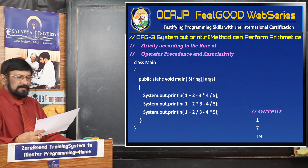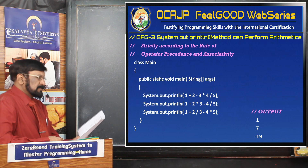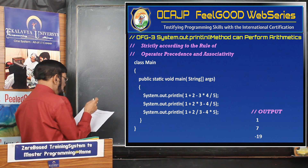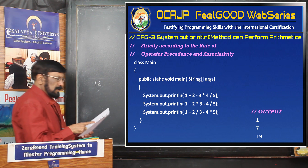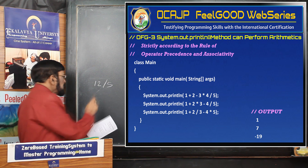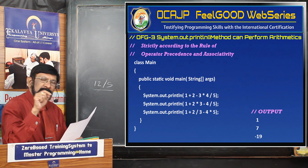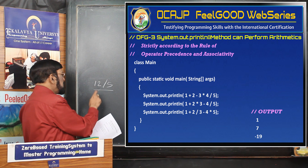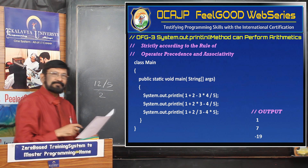Now we see three SOP statements. Let us see the result. Here, four operators are present: plus, minus, multiplication, and division. So first, multiplication and division are performed. Multiplication: 3 into 4 is 12. Thereafter, 12 divided by 5 — integer division happens. In case of integer division, regardless of the accuracy of the result, only the integer part is the result. So 2.4 is not the result — 2 is the result.